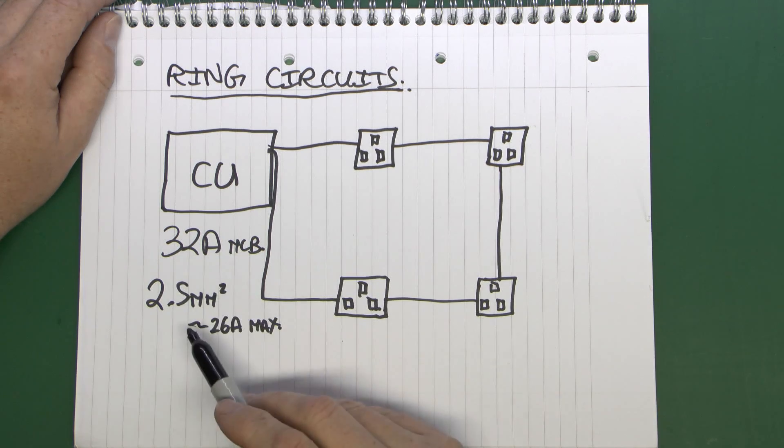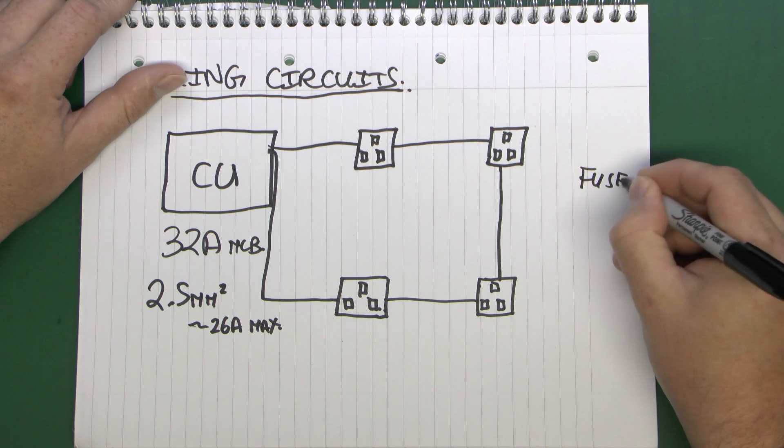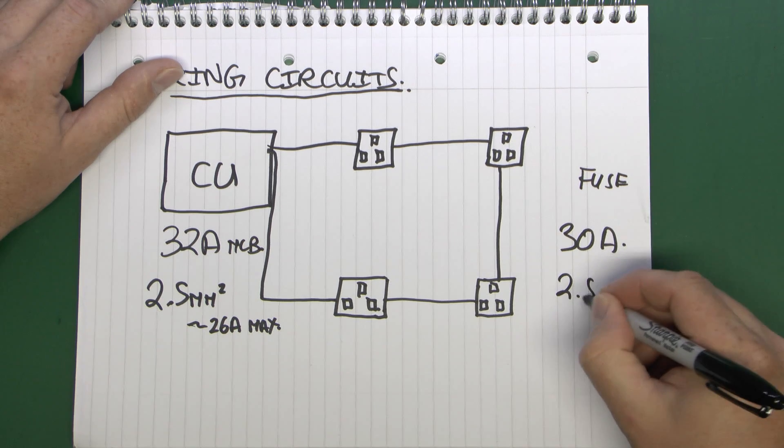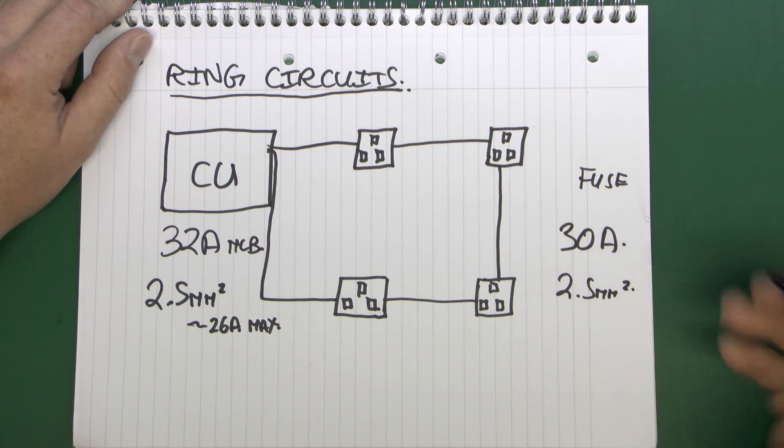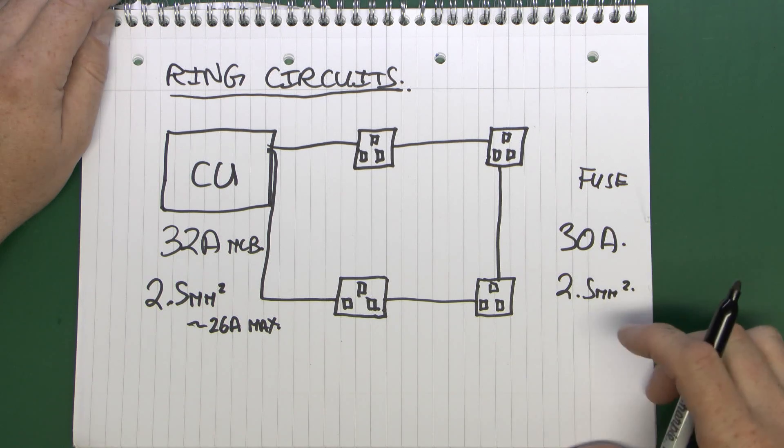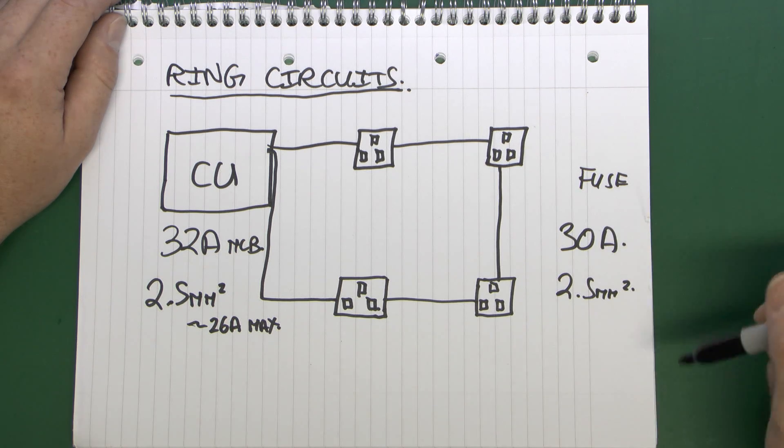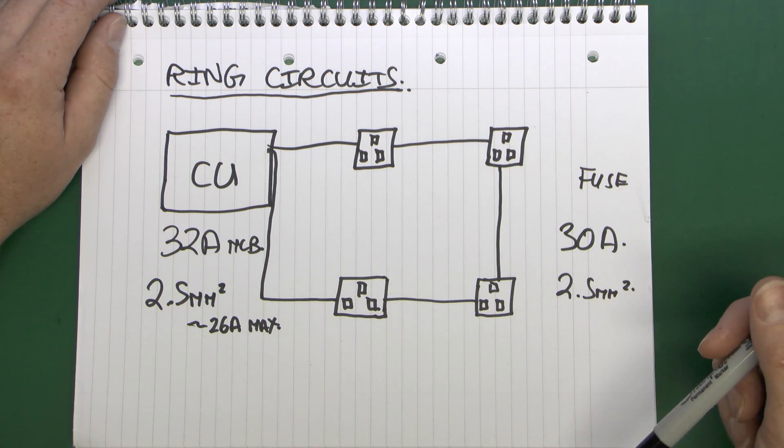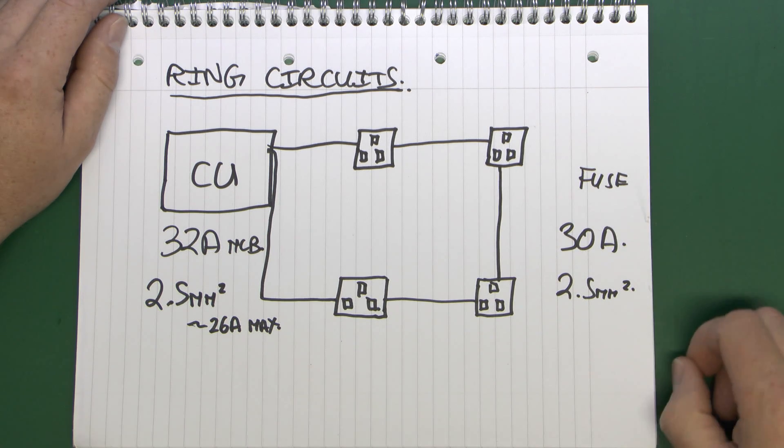Now the reality is that the current is not going to be shared equally because it depends on the length of the various cables and the resistance. But nevertheless, this has all been worked out by various people a long time ago. So provided the load is reasonably well distributed, then you're going to get less than 26 amps in both parts of the ring. On an older system with a fuse, the difference would be it would probably be a 30 amp fuse. Cable would still be pretty much the same size. These should have been deleted from the regulations a long time ago.